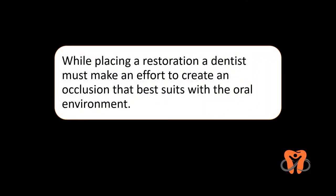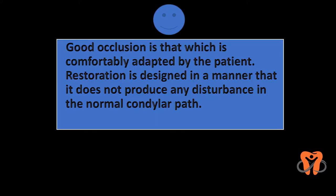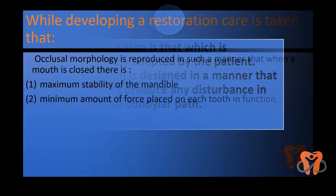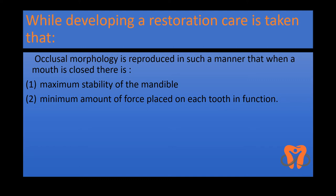While placing a restoration, a dentist must make an effort to create an occlusion that best suits the oral environment. Good occlusion is that which is comfortably adapted by the patient. A restoration is designed in a manner that it does not produce any disturbance in the normal condylar path — there should not be any deviation of the mandible during mouth closure. Care is taken that occlusal morphology is reproduced so that when the mouth is closed, there is maximum stability of the mandible and minimum force placed on each tooth in function.